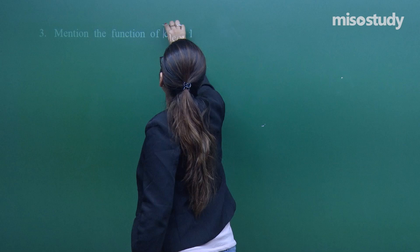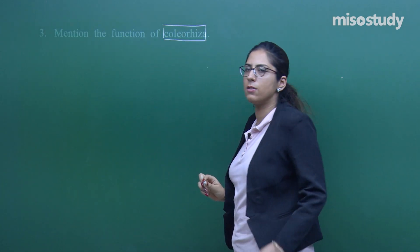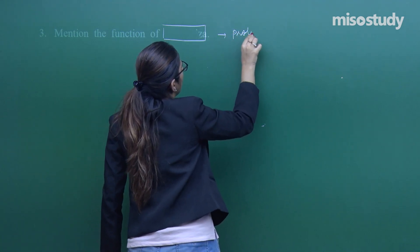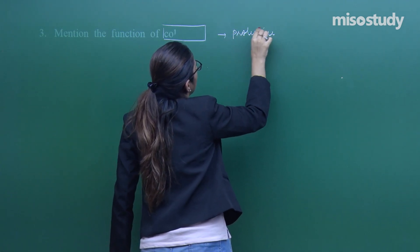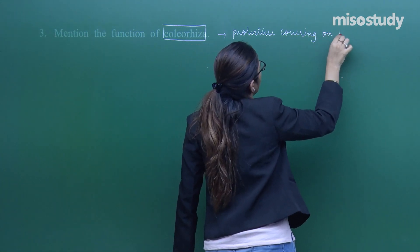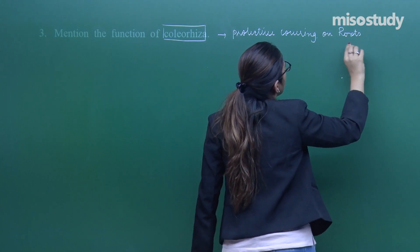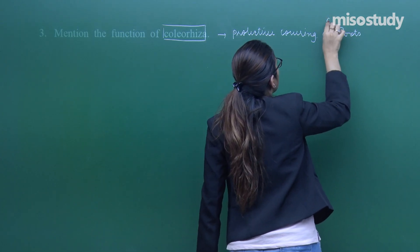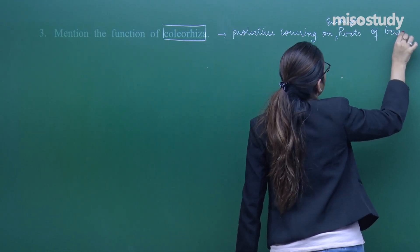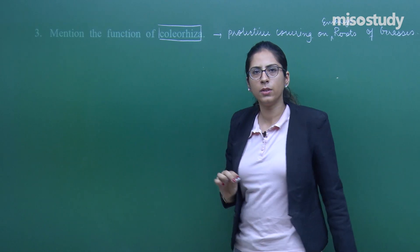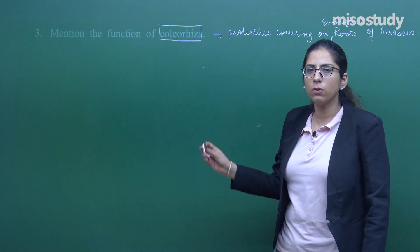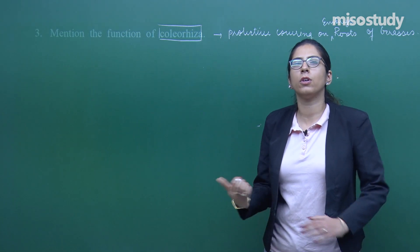Question number 3, also one mark: 'Mention the function of coleorhiza.' The coleorhiza is a protective covering present on the embryo roots of grasses. So this was the first category of one-mark questions — please note these down before we proceed to the next category.